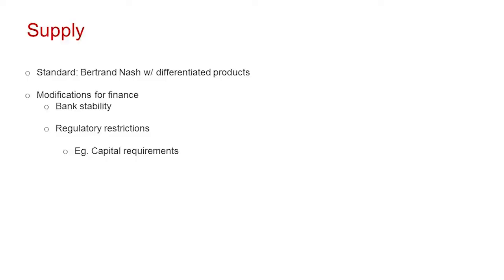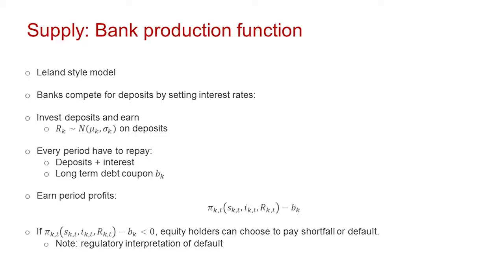Now let's talk supply. We start with a pretty simple Bertrand Nash model with differentiated products. Consumers think banks are different — that's product differentiation. Bertrand Nash just means banks compete on price. Now we make modifications necessary for finance. I'm going to introduce bank stability into the supply side model by defining a bank production function in a Leland-style model. Every period banks announce prices, consumers give them deposits, and banks take those deposits and invest them in a risky technology.